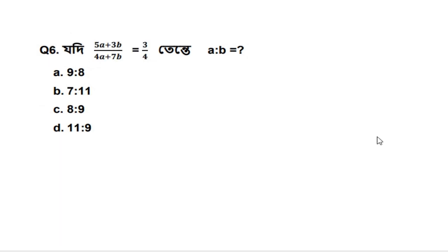Question number 6: 5a plus 3b divided by 4a plus 7b is equal to 3 by 4, then a is to b is equal to what? Option A is 9 is to 8, option B is 7 is to 11, option C is 8 is to 9, option D is 11 is to 9. If you like, subscribe, and share with us — thank you very much.